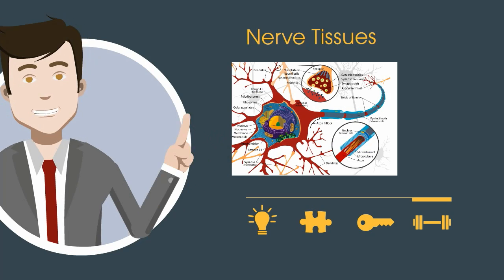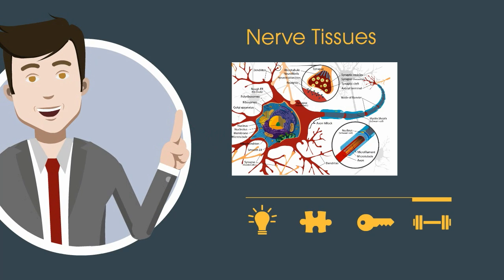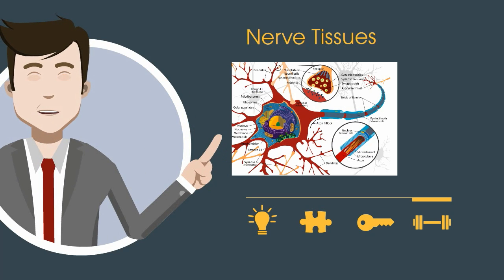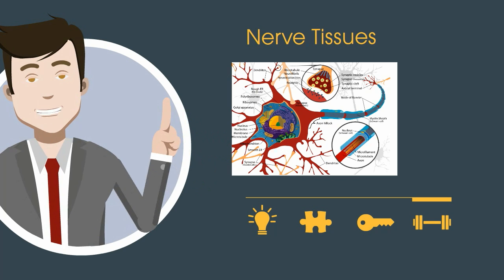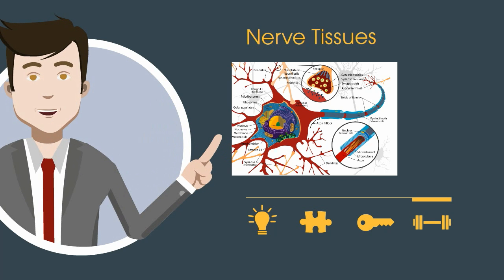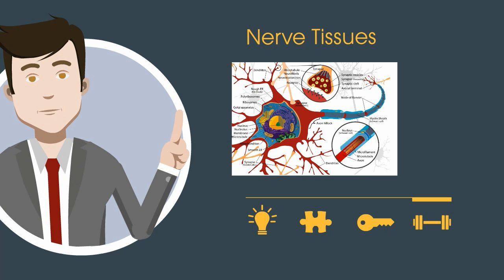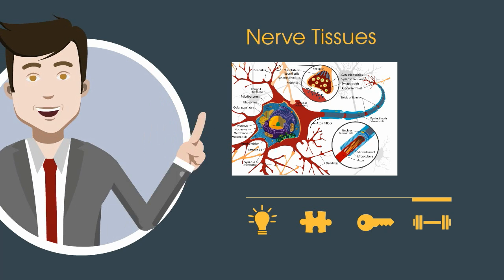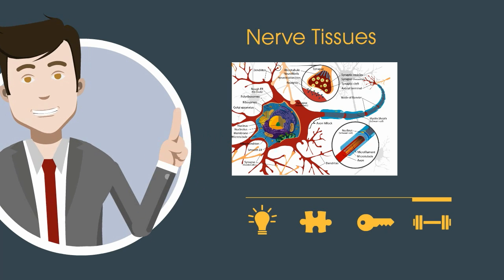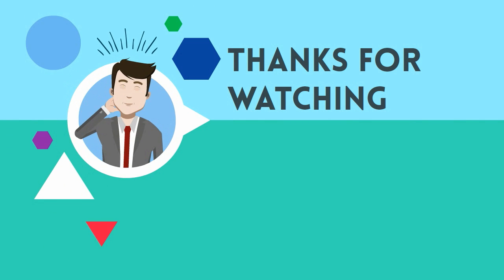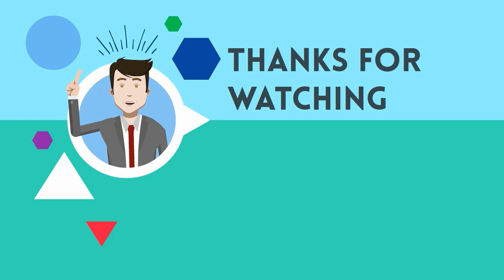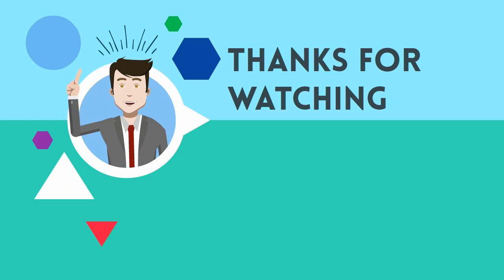There you have nerve tissues — a group of neurons working together to pass electrical signals from your brain to many parts of your body. Thanks for watching. Moo Moo Math uploads a new math and science video every day. Please subscribe and share.